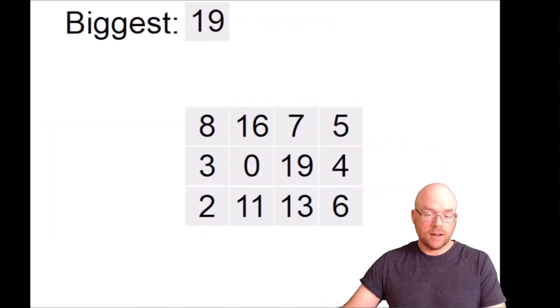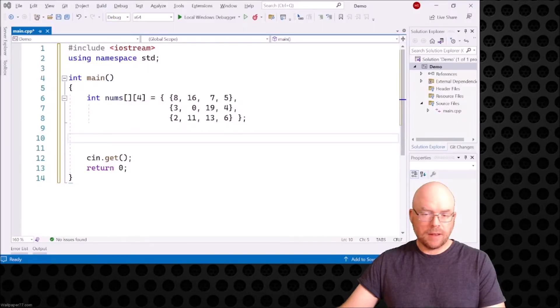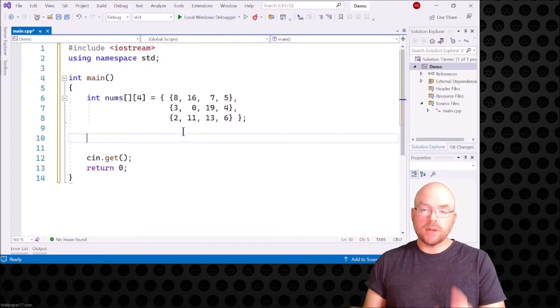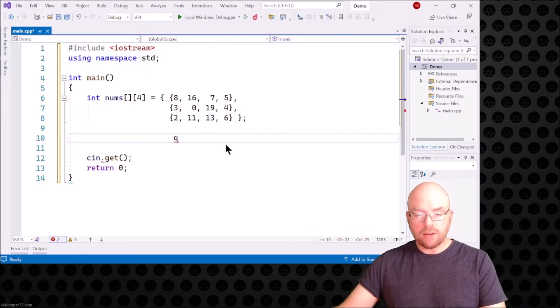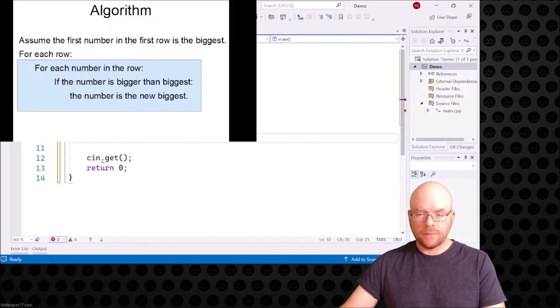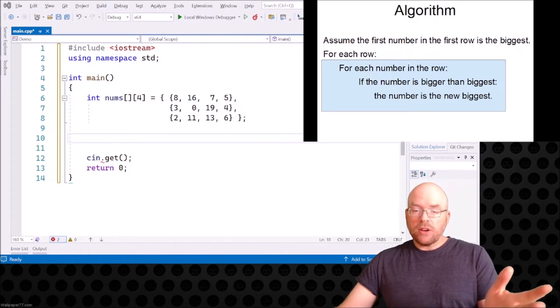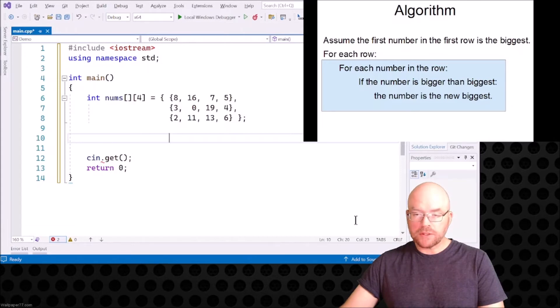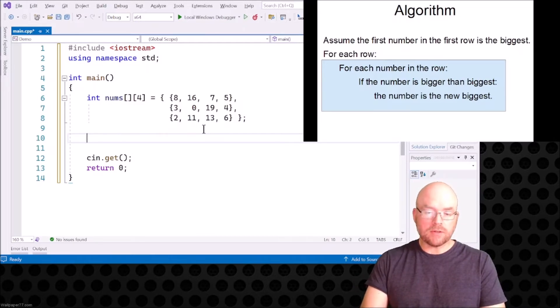Let's go take a look at our implementation by using Visual Studio. You can see that I've got a two-dimensional array that is already set up. So what we need to do is follow that algorithm. We have to assume that the first number in the first row is the biggest, right? So let's go ahead and create a variable called biggest and we'll assign to it the first number in the first row.